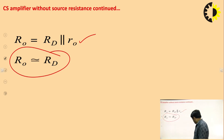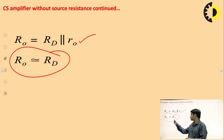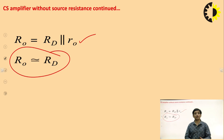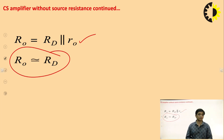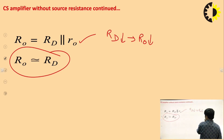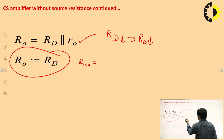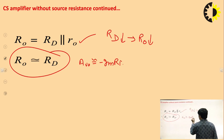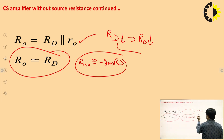If we neglect R0 (channel length modulation), the output resistance reduces to Rd. For any voltage amplifier, lower output resistance is desirable. However, if we reduce Rd to lower the output resistance, the issue is that the open-circuit voltage gain is approximately −gm × Rd — so if Rd is reduced, the voltage gain is also reduced, which is not desirable.